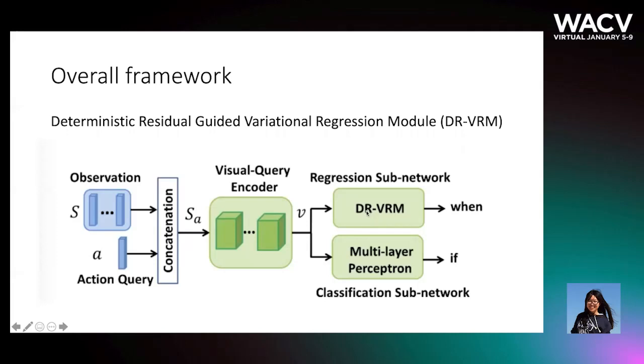The regression subnetwork is a DRVRM, or Deterministic Residue Guided Variational Regression Module. There are two key factors in this module. One is the Variational Regression Module, which can allow the network to generate diverse predictions for the starting moment.